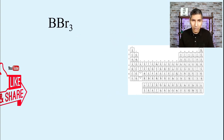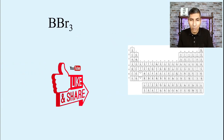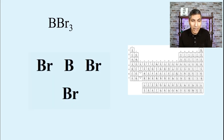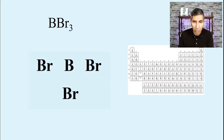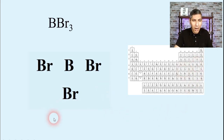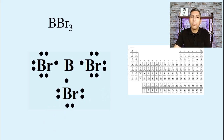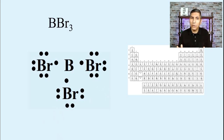We're going to jump right in and look at boron tribromide. Just like in the other video, we arrange these so that the central atom — boron — is in the middle, with the bromine atoms surrounding it. Bromine has seven valence electrons, so I'm putting seven dots around every bromine atom, starting from the outside and working inward. I find that helps avoid mistakes and makes these molecules easier to draw.